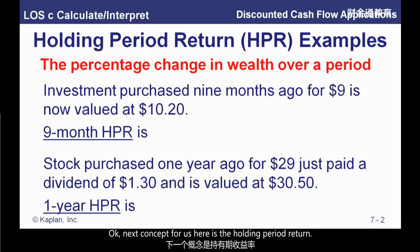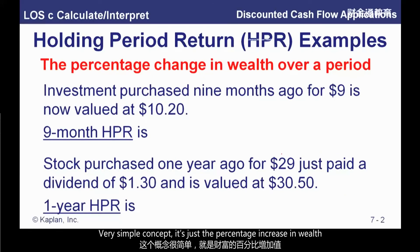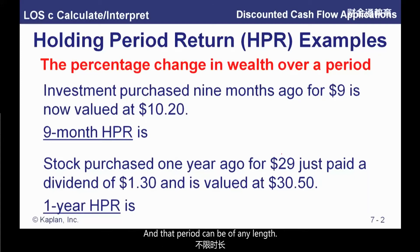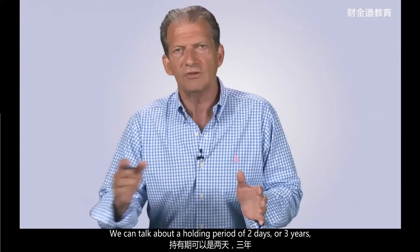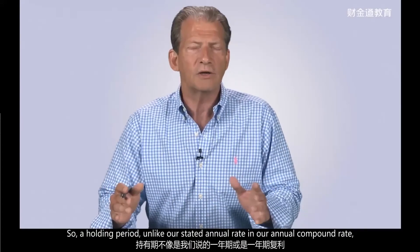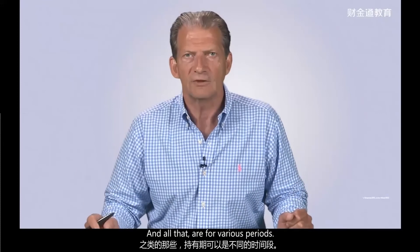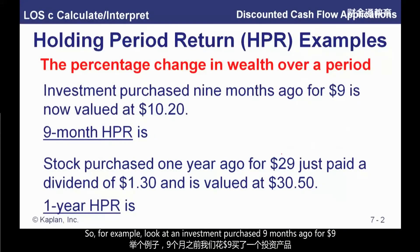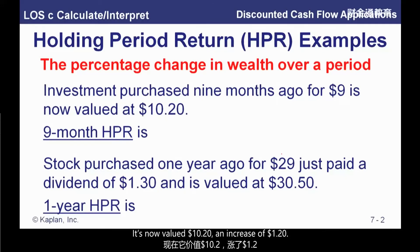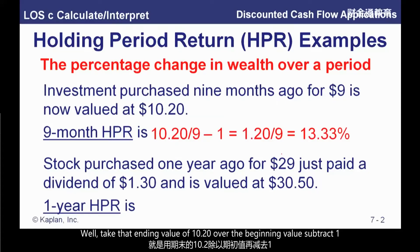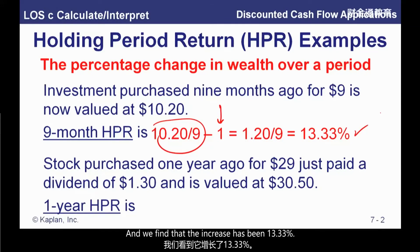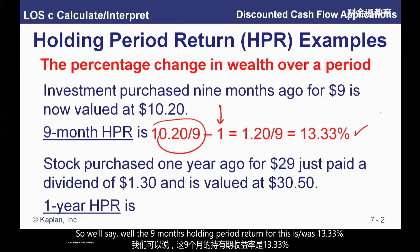The next concept is a holding period return — a very simple concept. It's just the percentage increase in wealth over a single period, and that period can be of any length: two days, three years, one year, nine months, whatever. Unlike stated annual rates and annual compound rates, holding period returns are for various periods. For example, an investment purchased nine months ago for $9 is now valued at $10.20, an increase of $1.20. The holding period return is the ending value of $10.20 over the beginning value, minus one — 13.33%. So the nine-month holding period return was 13.33%.